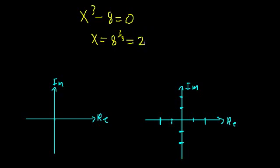Except we're not actually done. In general, if you have a polynomial of degree n equal to zero, then there are going to be n different solutions. Here we have a polynomial of degree 3, so there should be three different solutions, but we only found one of them: x is equal to 2. So there are two other numbers that when cubed give us 8.